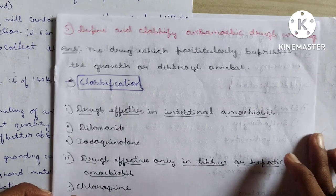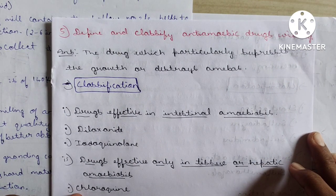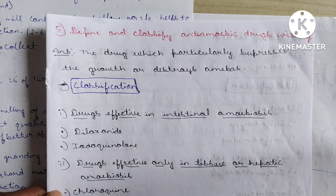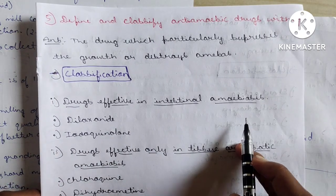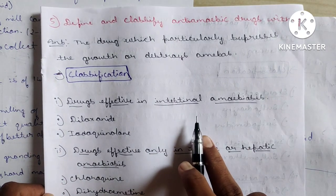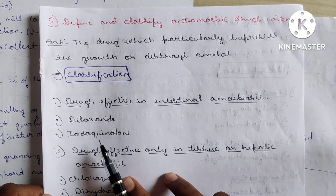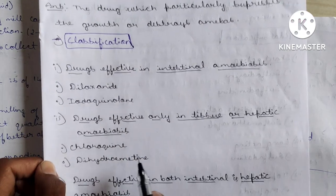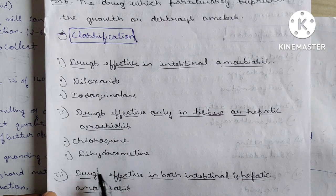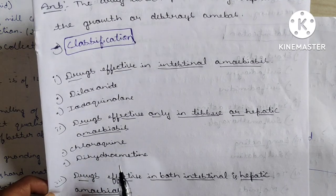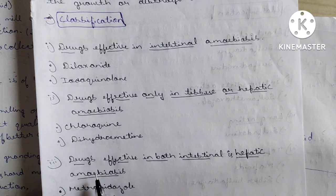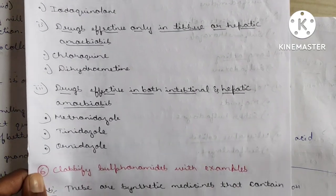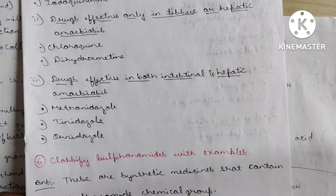Question 5: Define and classify anti-amoebic drugs with examples. Anti-amoebic drugs suppress the growth or destroy amoebas. Classification: Drugs effective in intestinal amoebiasis — diloxanide and iodoquinol. Drugs effective only in tissues or hepatic amoebiasis — chloroquine and dihydroemetine.